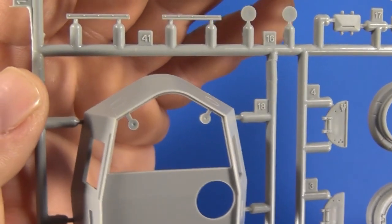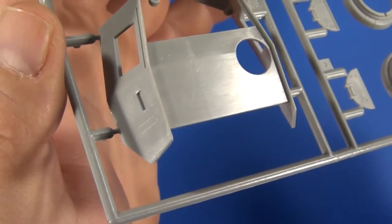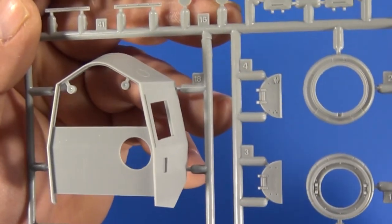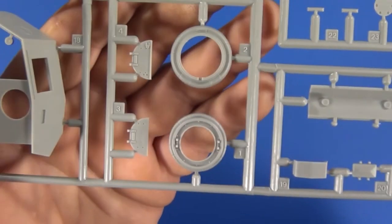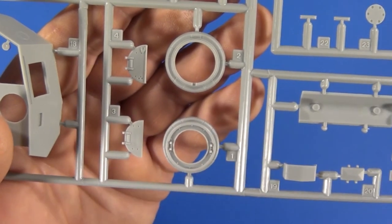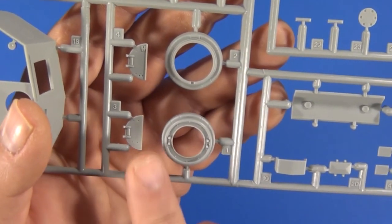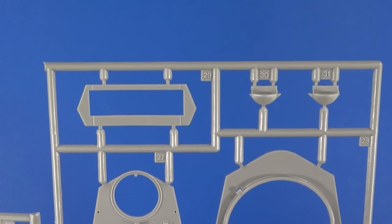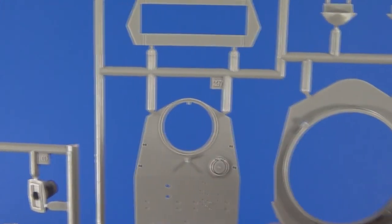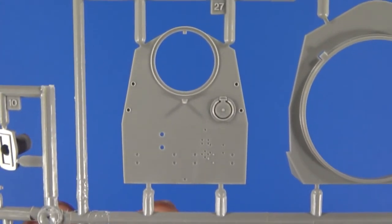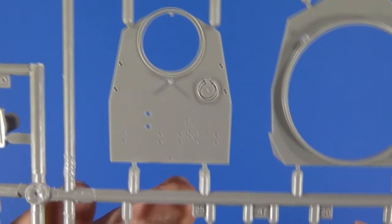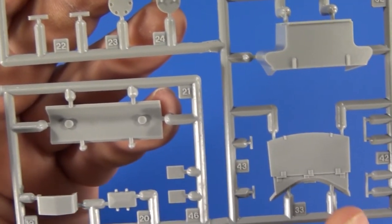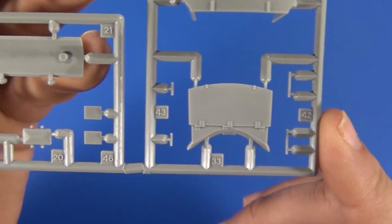This is a Panzer III N turret. These two little indentations on either side of the turret will have to be filled and sanded smooth. You can mold your cupola hatch in the open position, so that's kind of nice. I really like this top plate here with all the recessed bolt head detail and whatnot. And here's a stowage bin that will not be used with this particular kit.